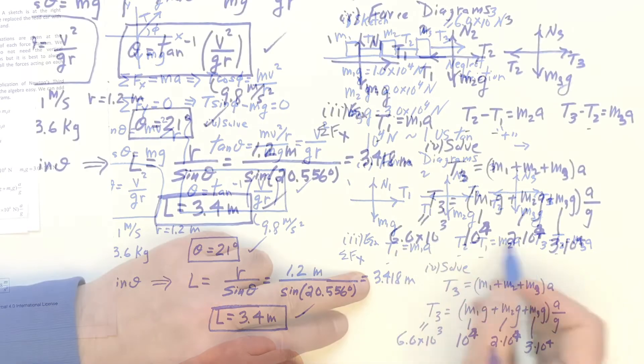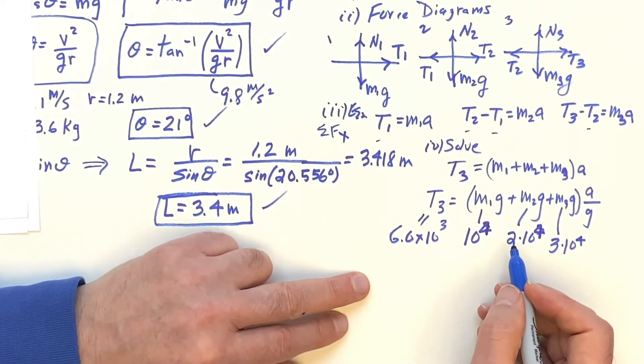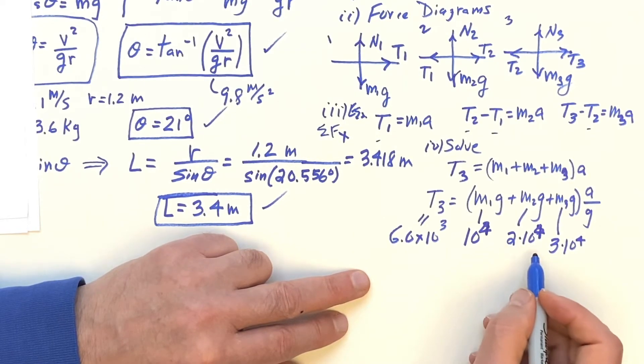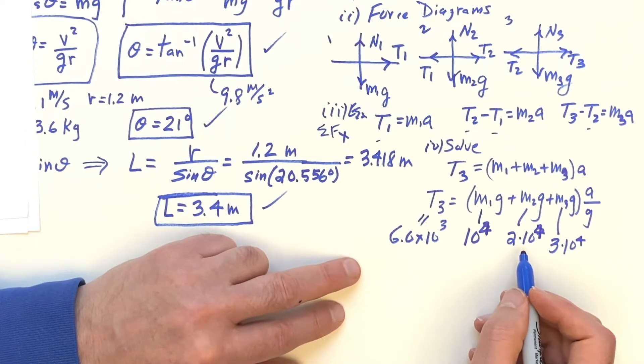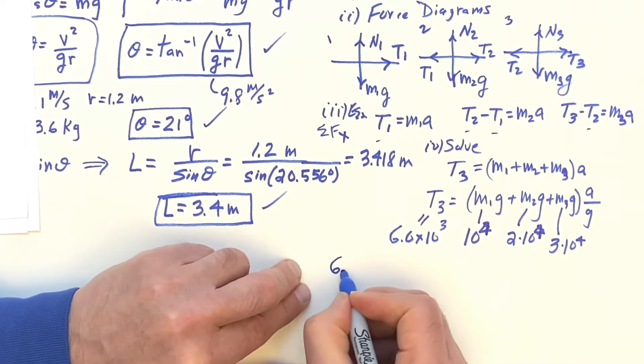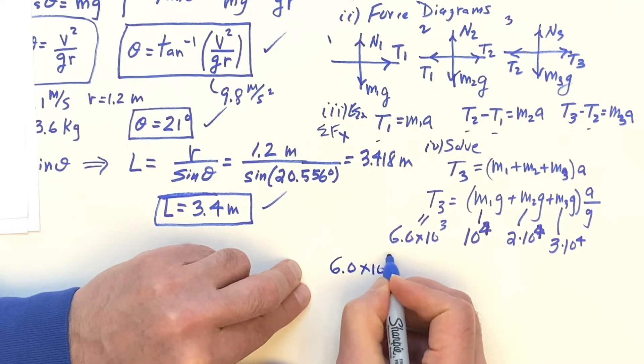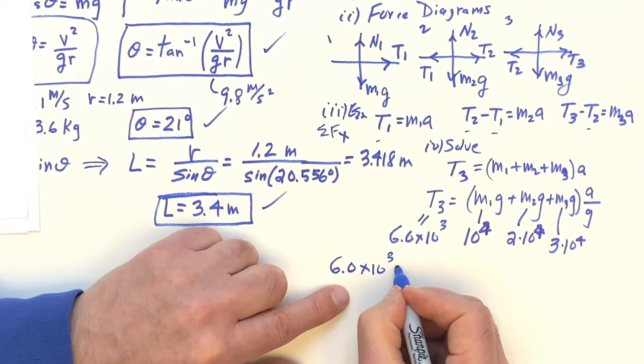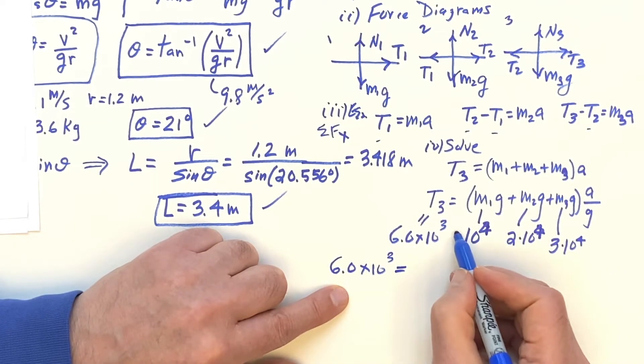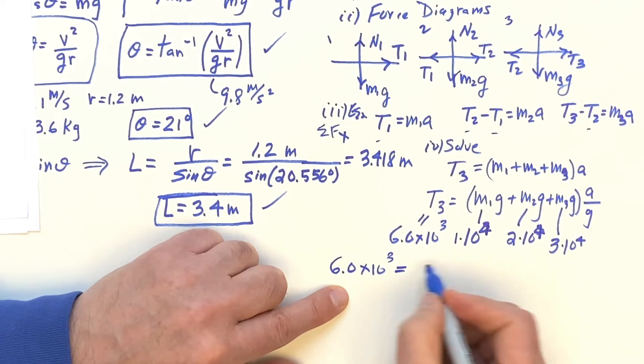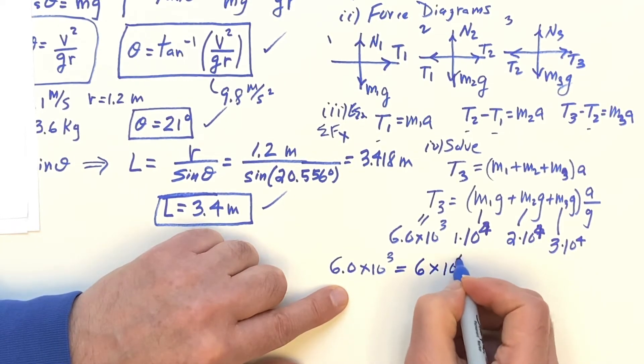I can divide out here. These 10 to the fourths, you know, come right out. Or, what we could do, we'll just work it out. This is 6 times 10 to the third here, and this is 1 plus 2 plus 3. That's going to be a 6 times 10 to the fourth.